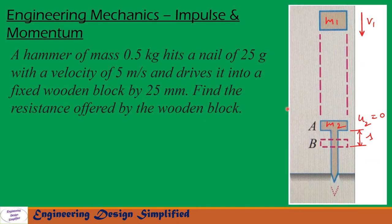In this problem, given is a hammer of mass 0.5 kg hits a nail of mass 25 grams with a velocity of 5 meters per second and drives the nail by 25 millimeter inside a wooden block. So we need to find the resistance offered by the wooden block. Let us see in the coming slides how to solve this problem.